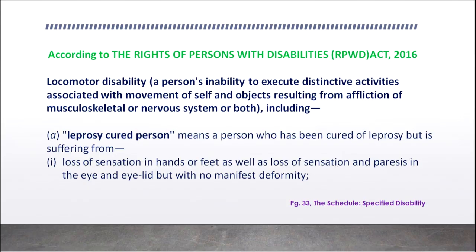Now we come to the Rights of Persons with Disabilities Act. It defines locomotor disability as a person's inability to execute distinctive activities associated with movement of self and objects, resulting from affliction of the musculoskeletal or nervous system, or both. It could be musculoskeletal — where a hand is amputated or paralyzed — or it could be because of a problem with the nervous system, or both.